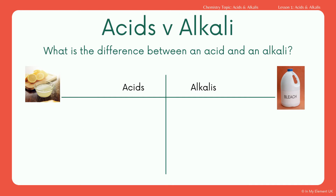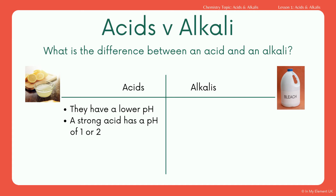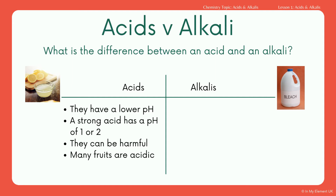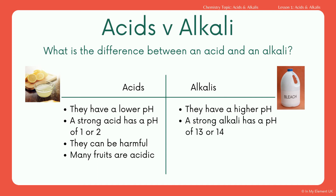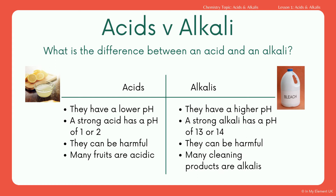Looking at the differences between acids and alkalis: acids have a much lower pH, ranging from one up to about six, so a strong acid will have a pH of one or two. Acids and alkalis are both harmful to us in different ways. Many fruits are acidic — lemons, oranges, and lots of citrus fruits. Alkalis have a much higher pH, ranging from 8 up to 14, so a strong alkali has a pH of 13 to 14. Many cleaning products are also alkaline.